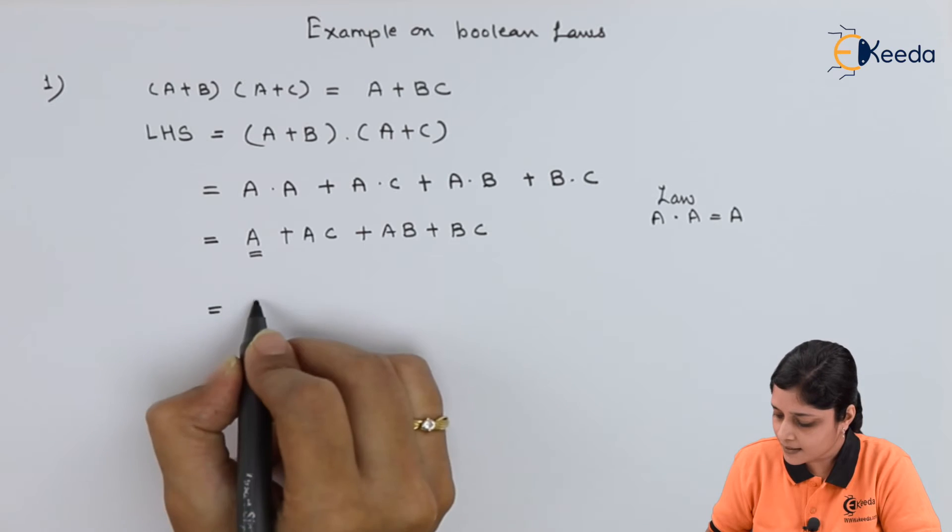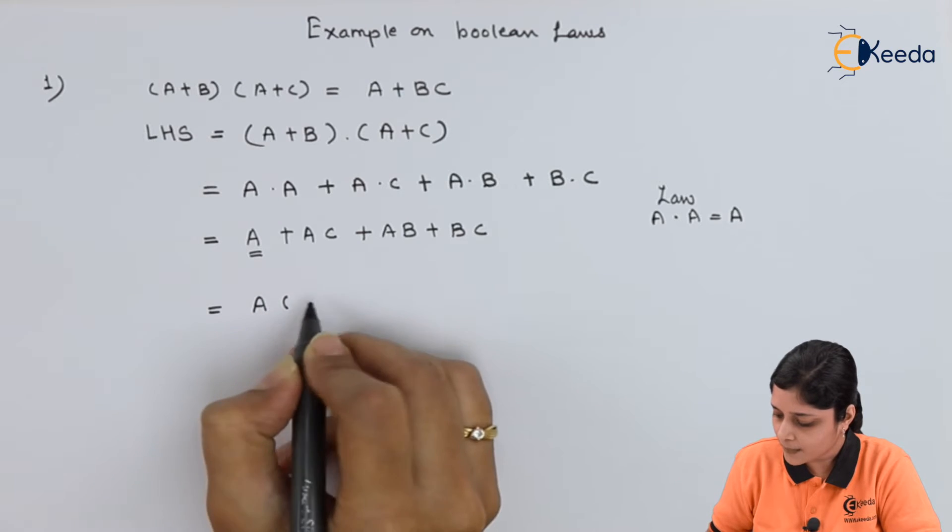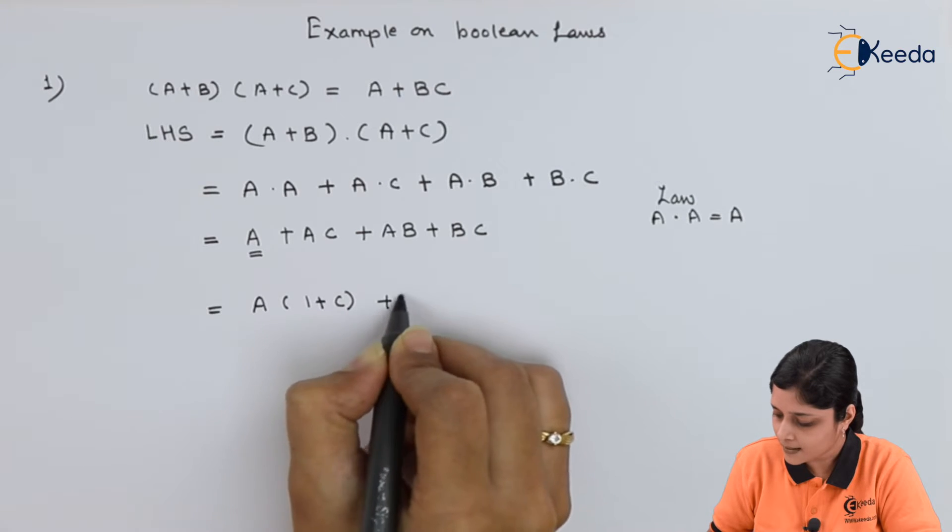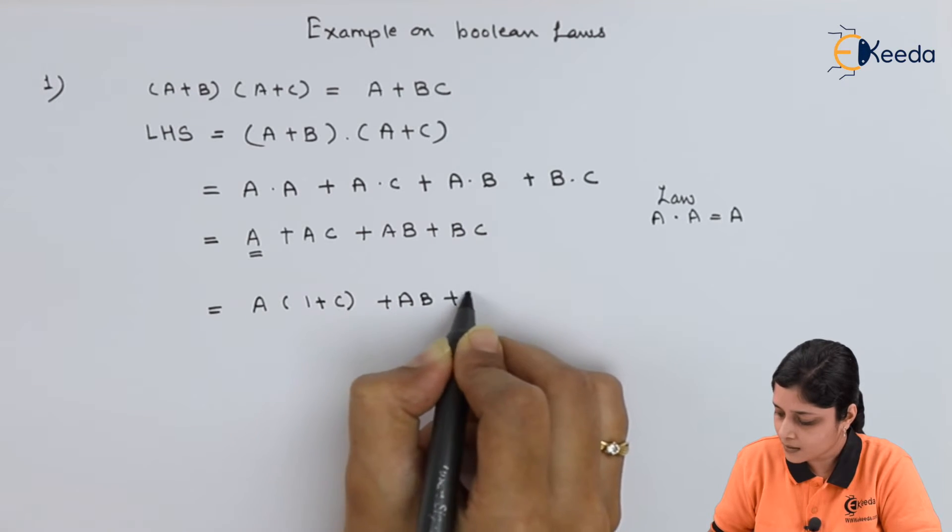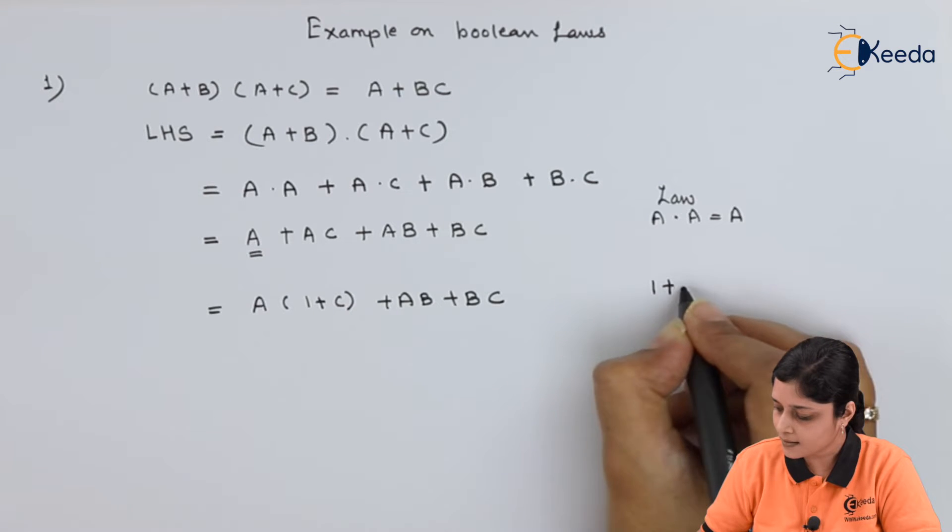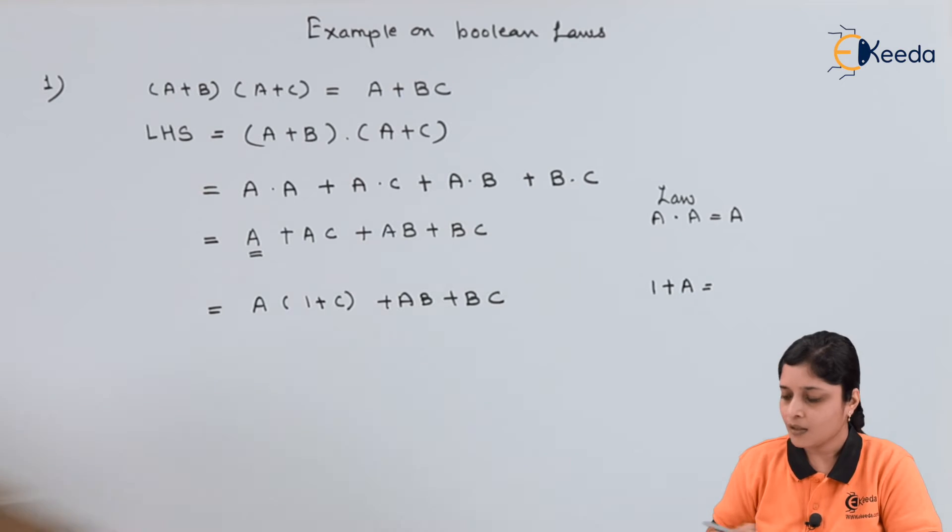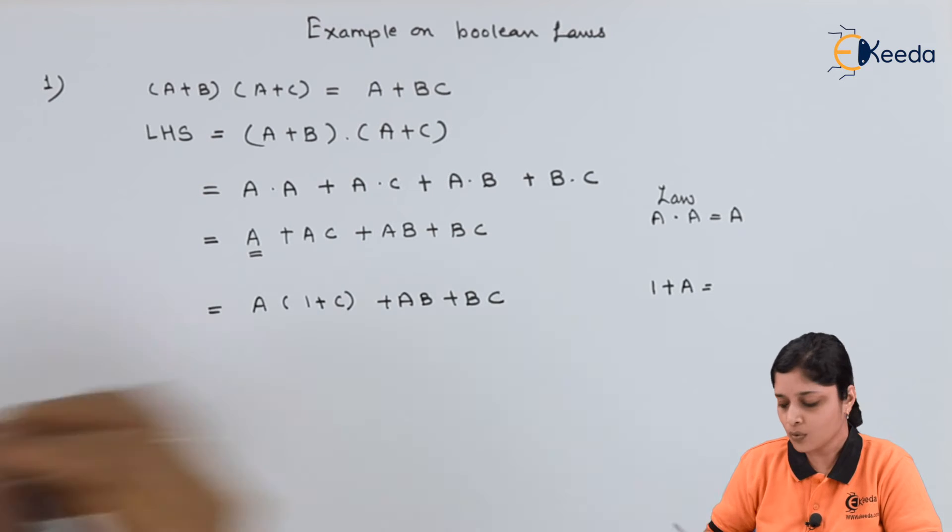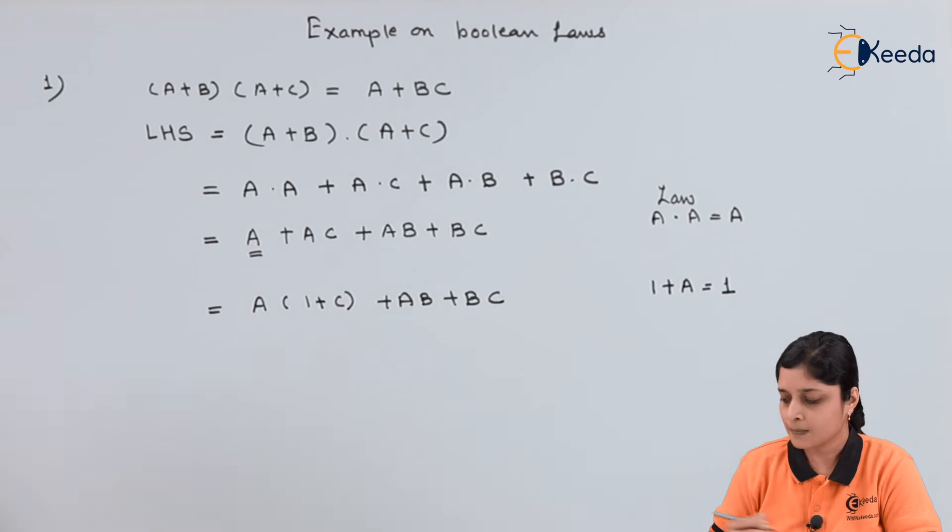Then A + AC. You can make A as common: A(1+C) + AB + BC. Now, we know 1+A is always equals to 1. This law you already know.